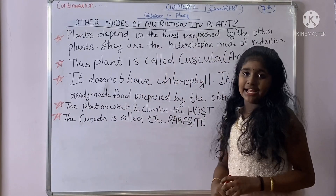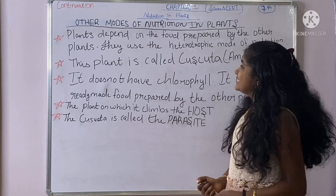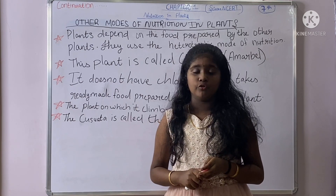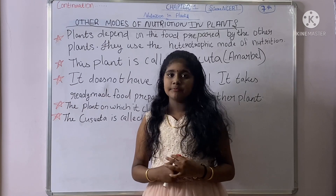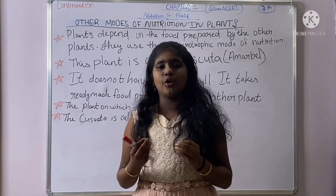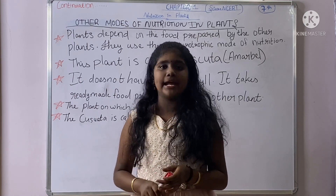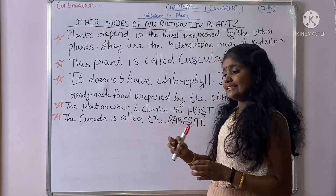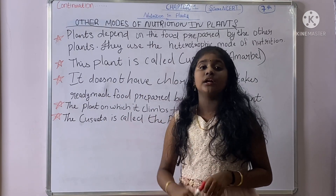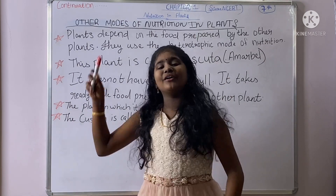Our next topic is other modes of nutrition in plants. You see different types of plants in our surroundings. Some plants do not have chlorophyll, so they cannot make food by photosynthesis. They take nutrients from other plants. This mode of nutrition is called the heterotrophic mode of nutrition.